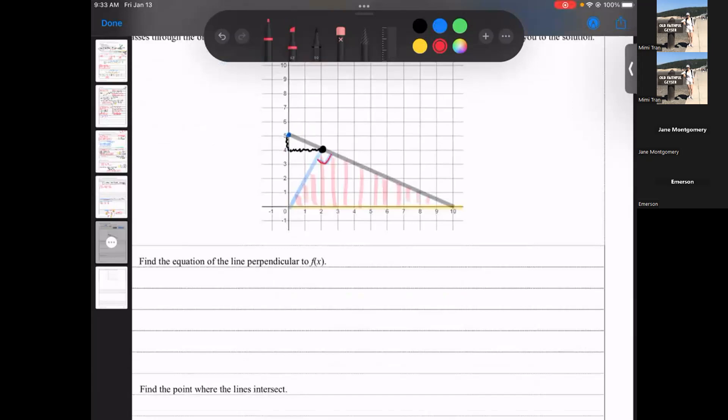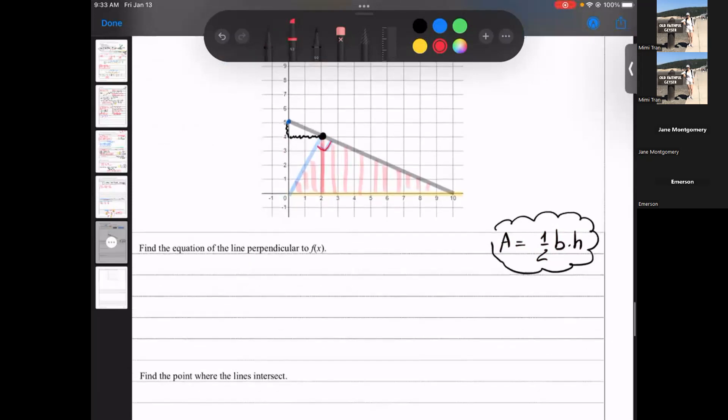We know the area is one half base times height. Move it over here, just a reminder. Do we have a height? Yeah, we have a height, right, roughly four units, right? Do we have a base? Well, I'm sorry. First you want to find the equation of a line first. I'm sorry, I was kind of, I got ahead of myself.